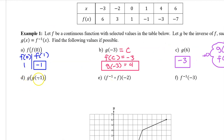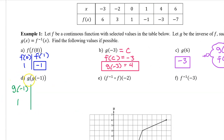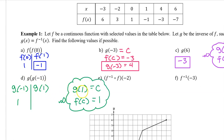Part D: for this notation, we work from the inside out. So first I need to find the value of g at negative one. g at negative one will equal c if and only if f at c is equal to negative one. So f at what is negative one? That's one. Then for part one of the composition, g at one will equal c if and only if f at c is equal to one. So f at what is equal to one? That's zero. That's the answer to part D.